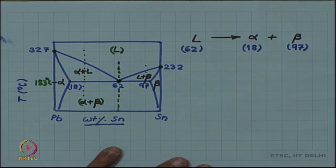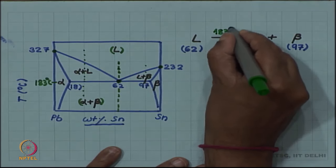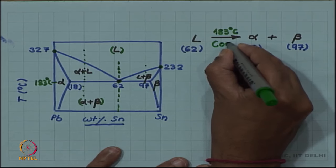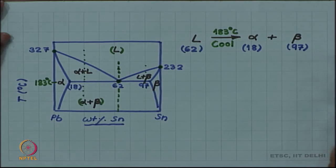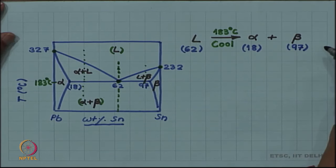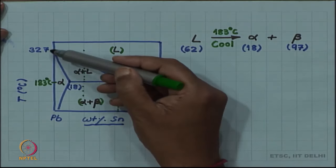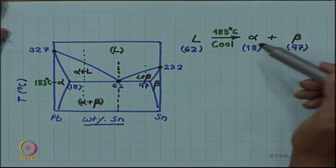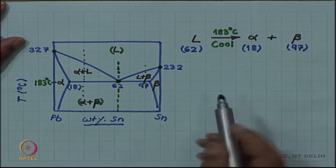And this reaction is happening at 183 degree Celsius. I write this over the arrow and the direction of the arrow is cooling. The reaction will happen if you cool the liquid. This is just like normal solidification where a liquid on cooling through its melting point solidifies. Only difference is that a normal liquid like a lead liquid or a tin liquid will solidify into a single solid phase. A eutectic liquid solidifies into a mixture of two different solid phases.